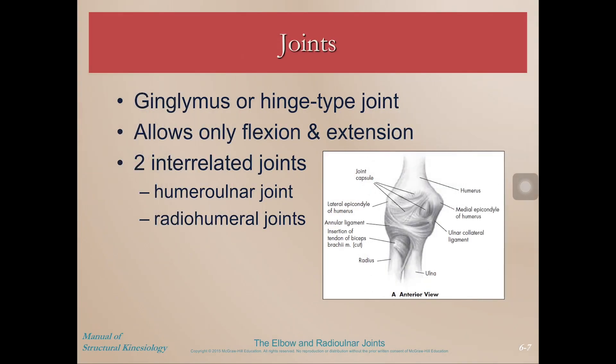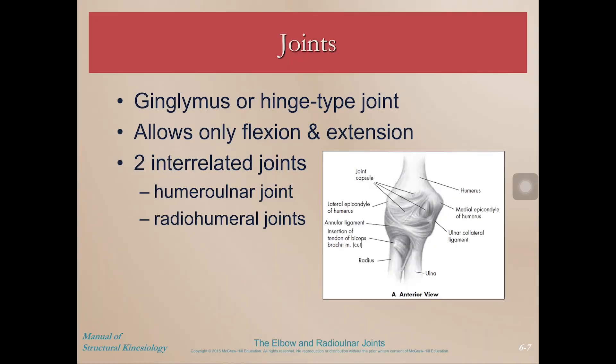The elbow is a hinge-type joint, allowing only flexion or extension — decreasing or increasing the angle between the humerus and the radius and ulna. But really there are two interrelated joints, because the humerus articulates with both the radius and the ulna. So we have the humeral ulnar joint and the radial humeral joint.